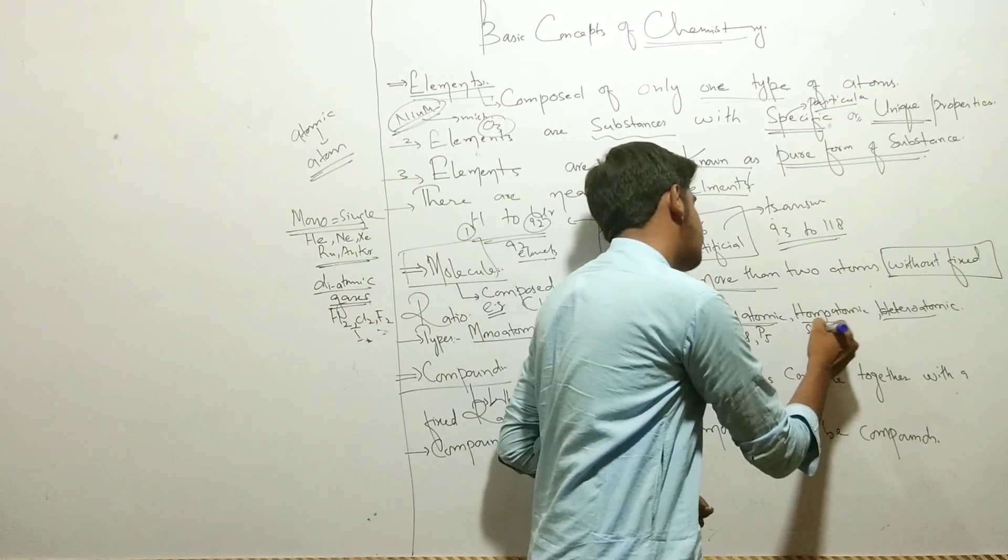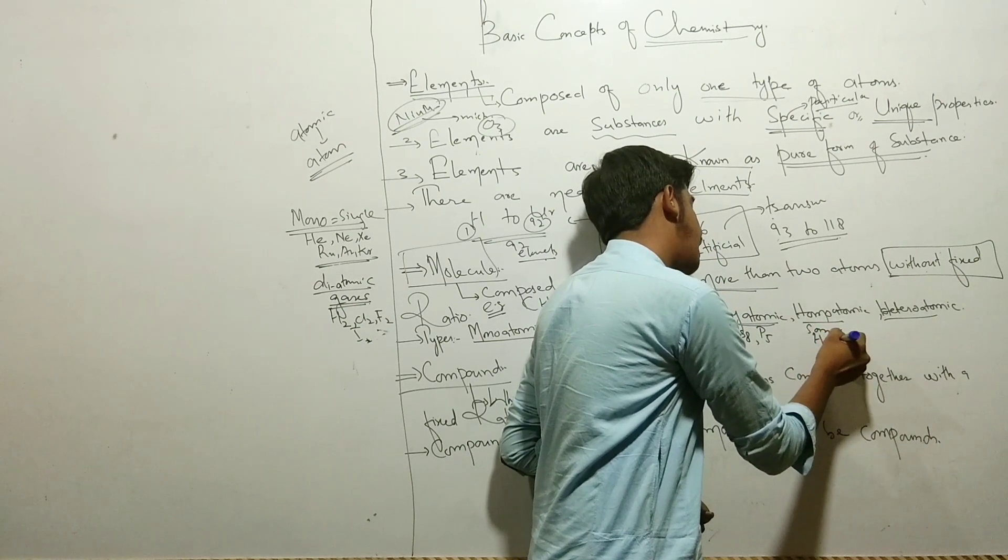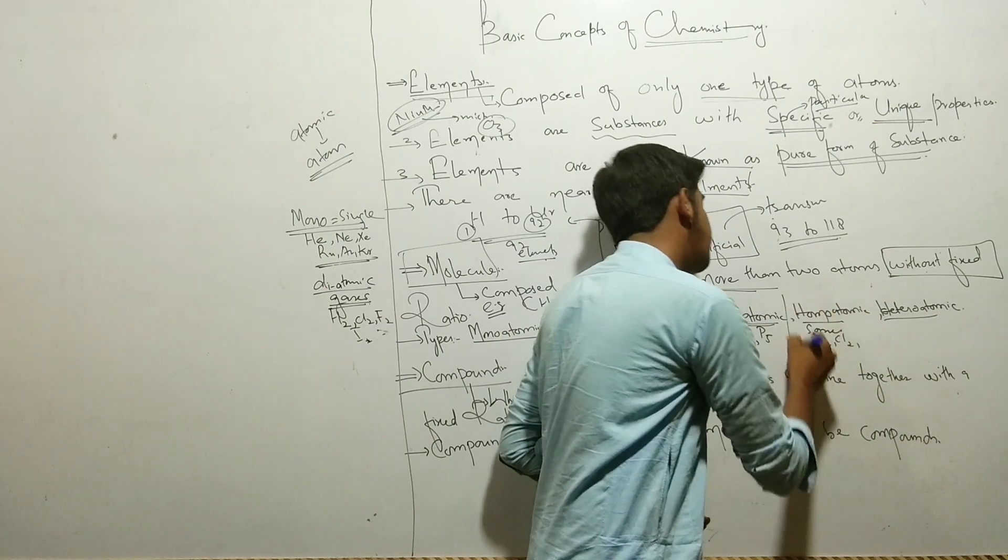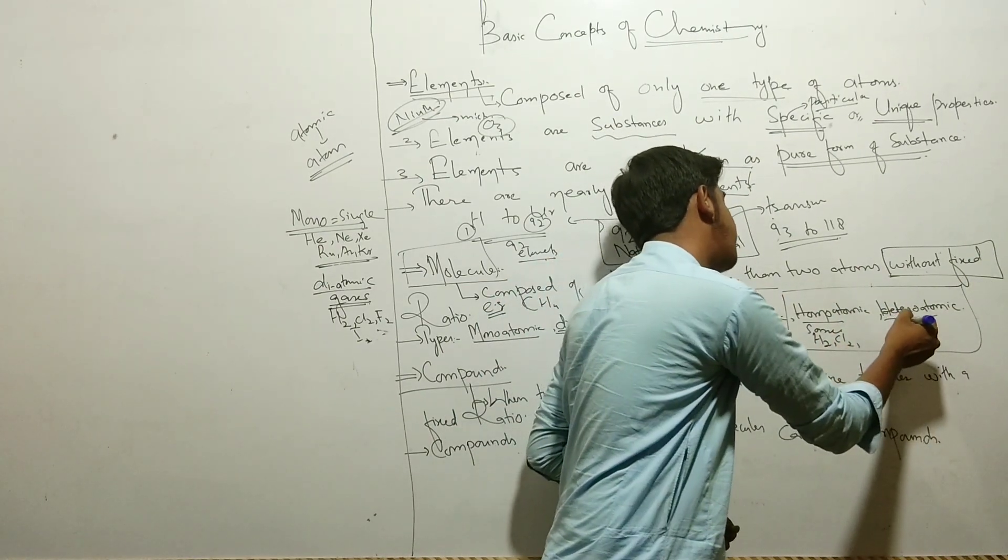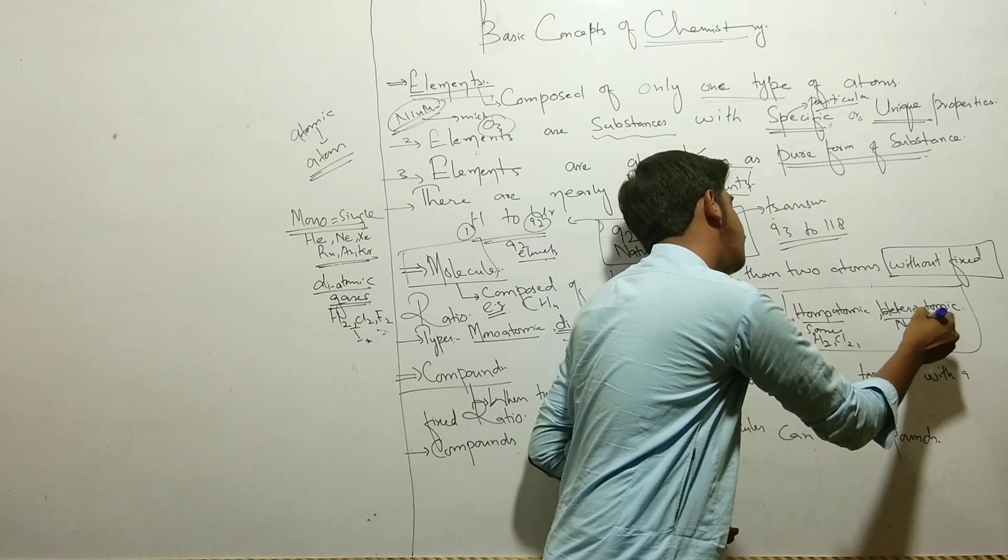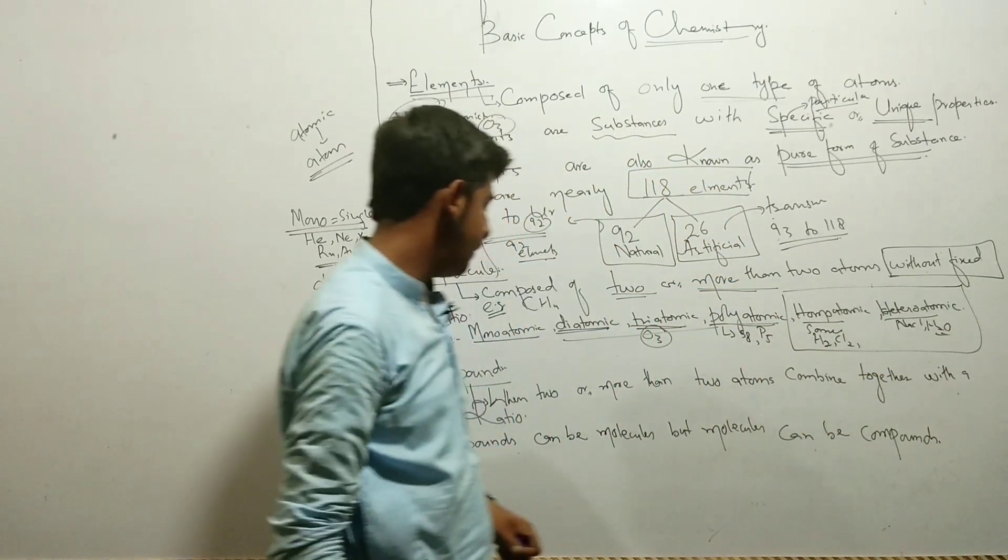After that, homoatomic means same atom. You can choose hydrogen, chlorine - same atom. Heteroatomic means different atoms. These are homoatomic, those are heteroatomic. Examples of heteroatomic include NaCl and water. These are also heteroatomic.